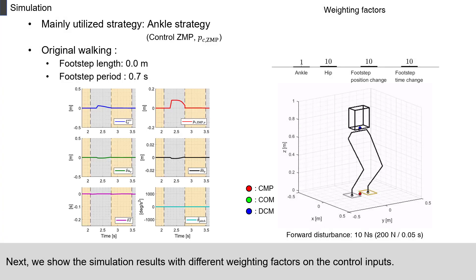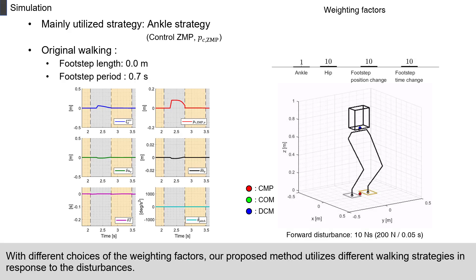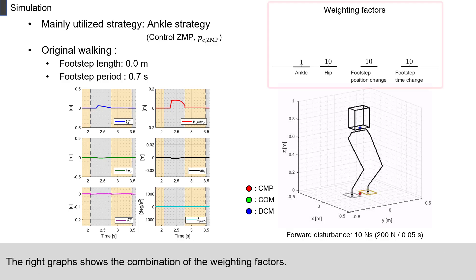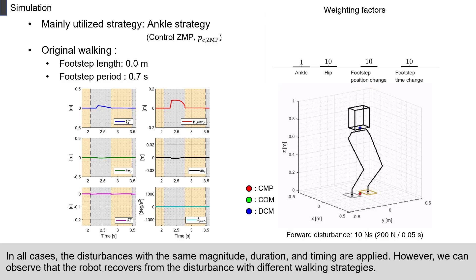Next, we show the simulation results with different weighting factors on the control inputs. With different choices of the weighting factors, our proposed method utilizes different walking strategies in response to the disturbances. The right graph shows the combination of the weighting factors. In all cases, the disturbances with the same magnitude, duration, and timing are applied. However, we can observe that the robot recovers from the disturbance with different walking strategies.